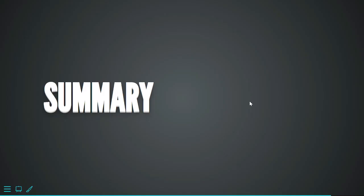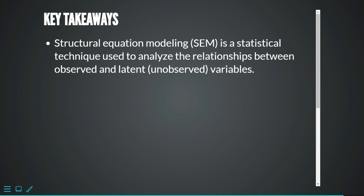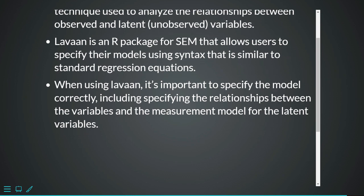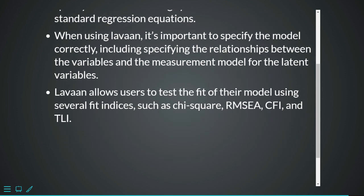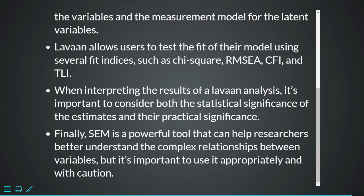To summarize the key takeaways: Structural Equation Modeling is a statistical technique used to analyze relationships between latent unobserved variables and observed variables. The lavaan package is used for SEM in R and allows model specification using syntax similar to standard regression equations. It's important to specify your model correctly by assigning the right measurement variables to the right latent variables. Lavaan allows users to test model fit using indices such as chi-square, RMSEA, CFI, and TLI. When interpreting results, consider both statistical and practical significance. SEM is a powerful tool for understanding complex relationships, but must be used appropriately and with caution.